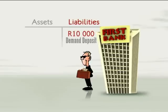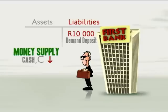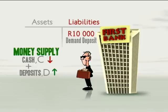Now, how does this deposit affect the money supply? Well, the amount of cash in circulation outside the banking sector has decreased by 10,000 Rand. Note that cash, coin and bank notes held by banks are not considered part of the money supply. But while the amount of cash in the economy has fallen, demand deposits, indicated by the letter D, have increased by 10,000 Rand — the amount of Mr Smith's deposit. The composition of M1 money has changed, but not the overall amount. So the money supply has not changed.